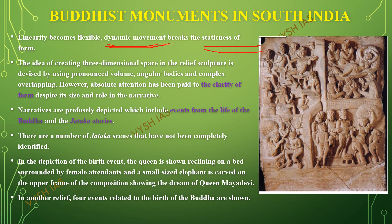The idea of creating three-dimensional space in relief sculpture is achieved by using pronounced volume, angular bodies, and complex overlapping. Absolute attention has been paid to the clarity of the form despite the size and role in the narrative. This is an example of a sculpture found in the Amaravati Stupa.